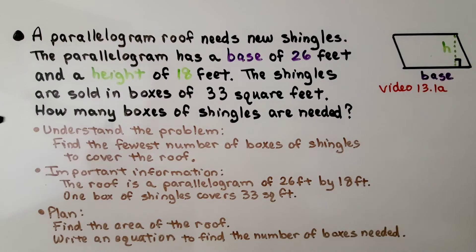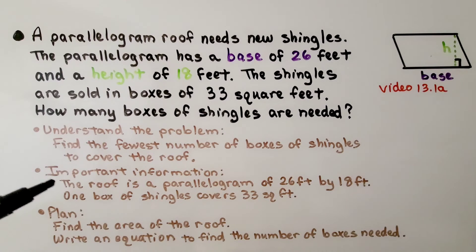So first we need to understand the problem. We need to find the fewest number of boxes of shingles to cover the roof. The important information is that the roof is a parallelogram of 26 feet by 18 feet, and that one box of shingles covers 33 square feet. Our plan is to find the area of the roof and write an equation to find the number of boxes needed.